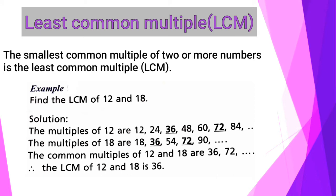Therefore, the LCM of 12 and 18 is 36. In short, we can say that 36 and 72 are common multiples of 12 and 18, but 36 is the least common multiple.